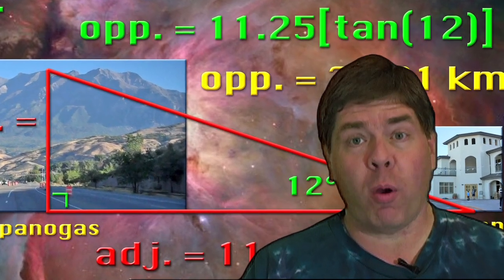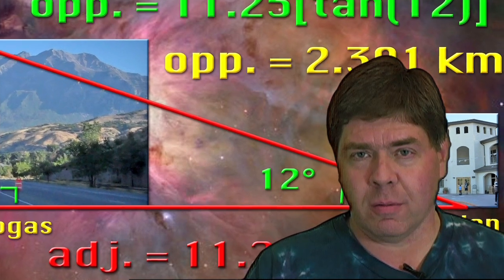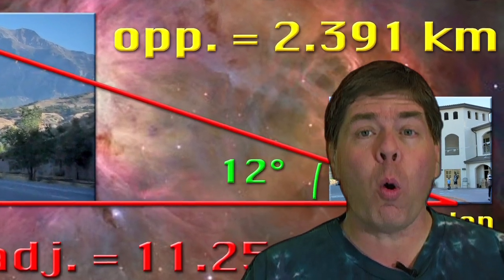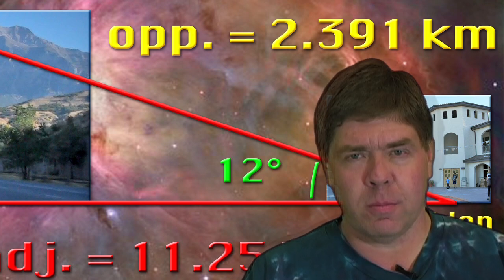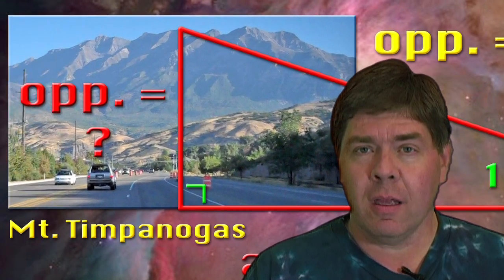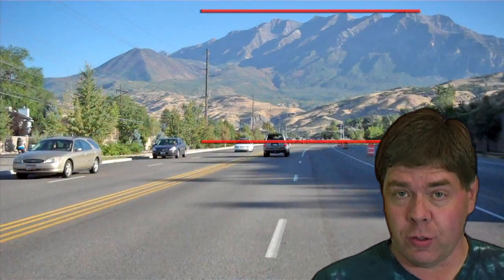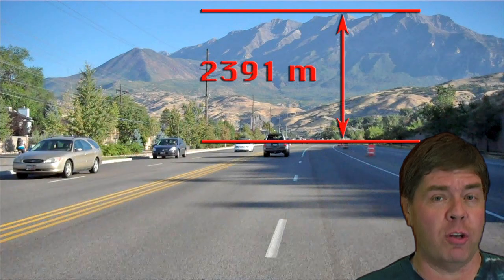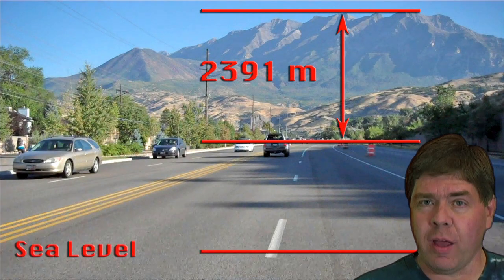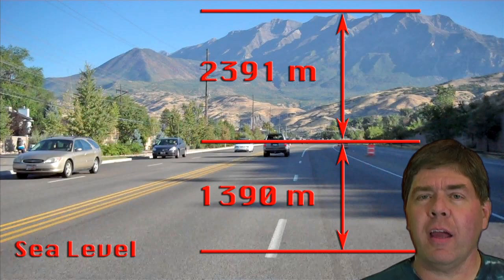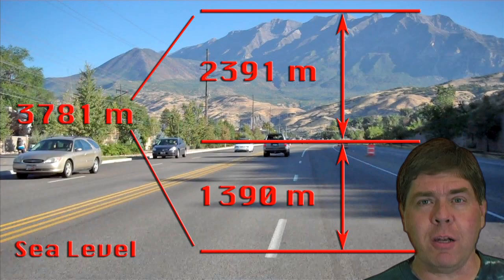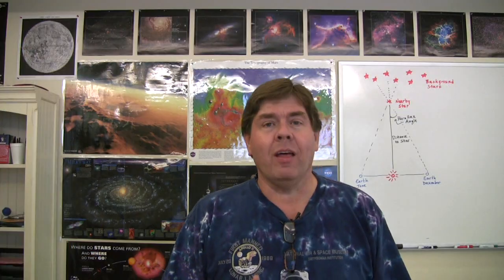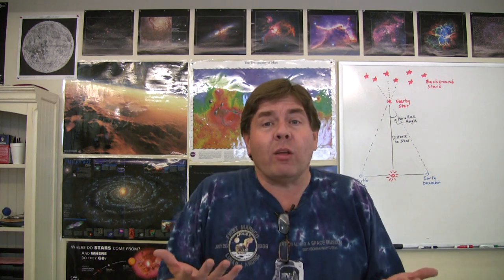I calculate a height of 2.391 kilometers, or 2,391 meters — that's the height of the mountain from its base to its peak. Adding our altitude here at Walden School, which is 1,390 meters, to the height of the mountain, which is 2,391 meters, gives us a total height for Mount Timpanogos of 3,781 meters. Checking that on a map, the actual height is 3,581 meters, so you can see that we got quite close.